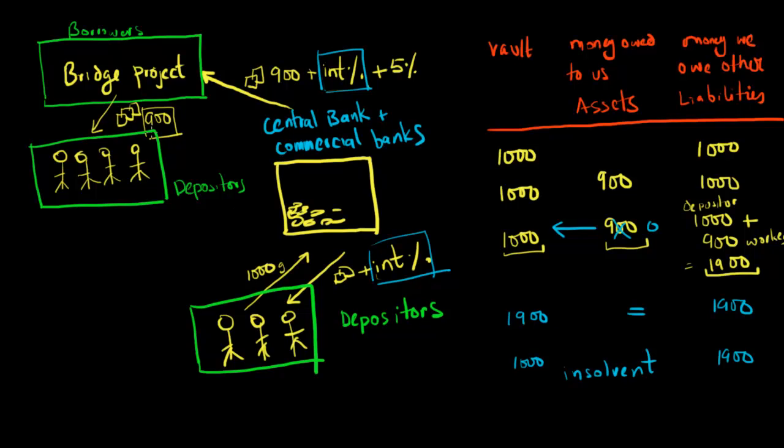Another thing that can go wrong in this entire system is that these depositors, independent of whether or not this bridge project person can pay you back, these depositors might one day wake up and decide that they really want to redeem all the notes that the banks have given them for actual gold. So imagine that one day, these depositors over here wake up and decide to go to the commercial banks and try to get their 1,000 gold coins out. And also imagine at the same time, these depositors go to the commercial banks and try to redeem their 900.